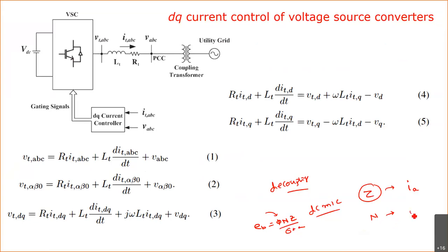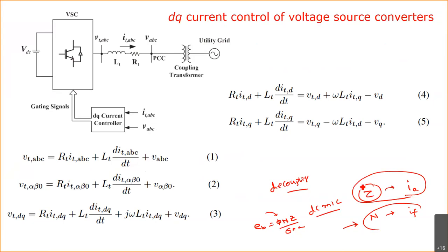Since Φ is proportional to the field current I_F, the speed is controlled by I_F. So if you want to control the torque in a DC machine, you control the armature current I_a; if you want to control speed, you control the field current I_F. This is the main advantage of the DC machine — the control is decoupled. When you control I_F, there is no change in I_A, so you can keep torque constant while varying speed.